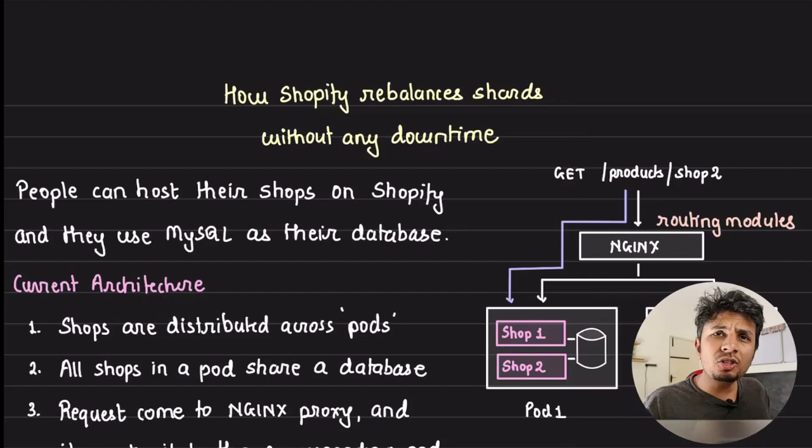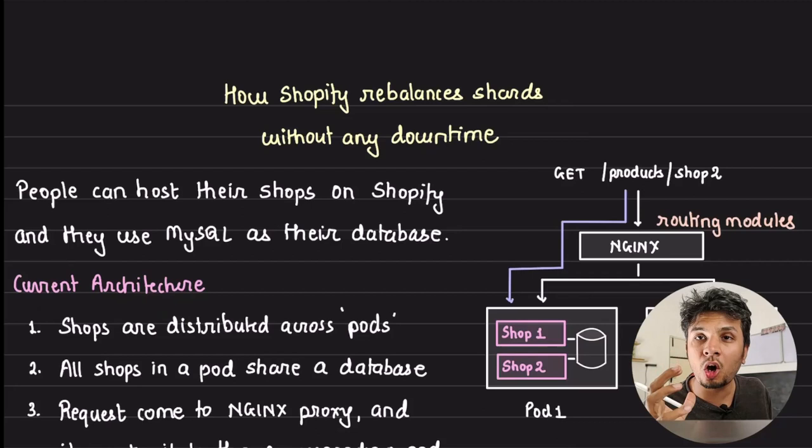A truly scalable system is one that can be scaled horizontally. A database is typically scaled by splitting the data across multiple shards. But what happens when a particular shard becomes hot due to excessive load hitting it while others remain underutilized? A classic way to address this is by moving a fragment of data from one shard to another.